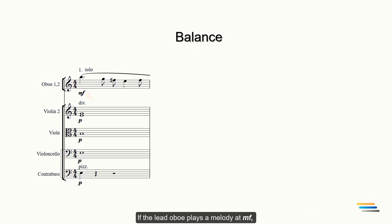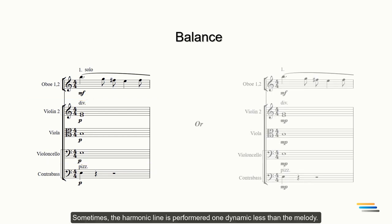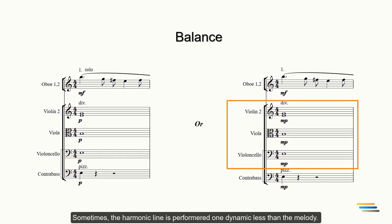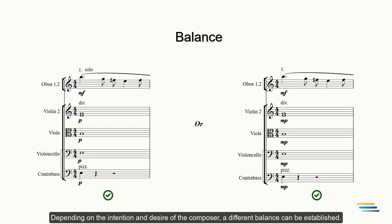The perfect balance depends on what you want to present in the score. If the lead oboe plays a melody on mezzo forte and the strings play a sustained chord on piano, that means the melodic line is essential one. Sometimes the harmonic line is performed one dynamic less than the melody. This means that the harmonic line is also enhanced to make the melodic line more dramatic. As you can see both options are correct. Depending on the intention and desire of the composer, a different balance can be established.